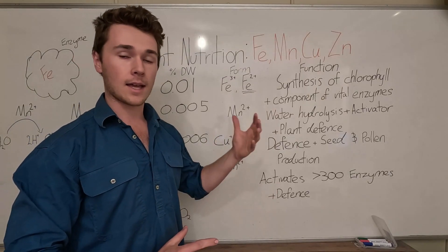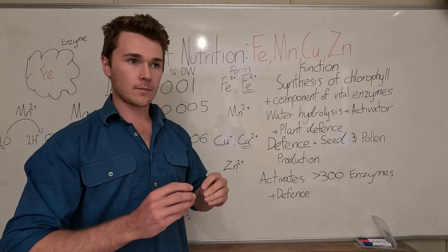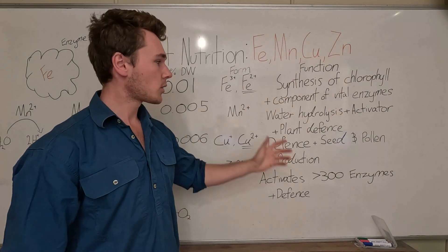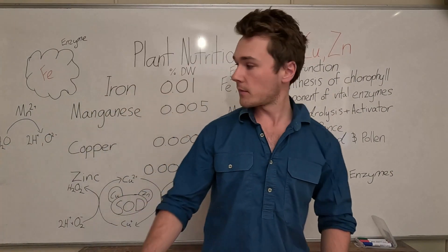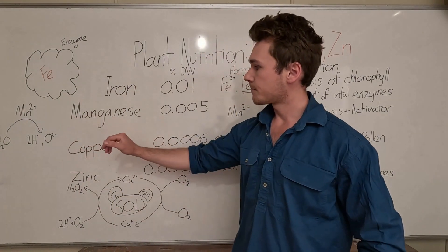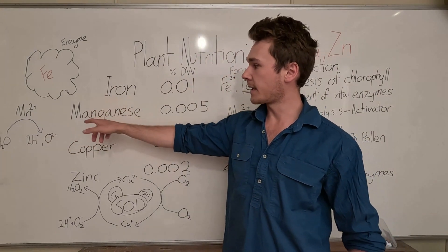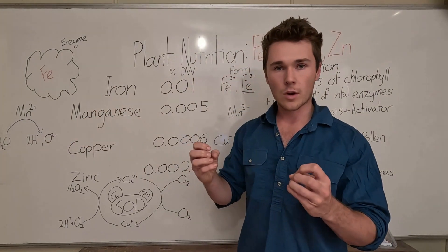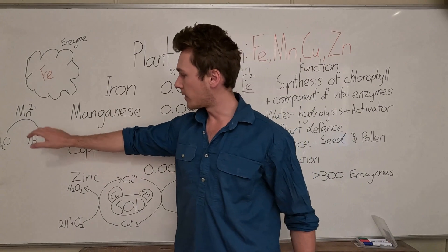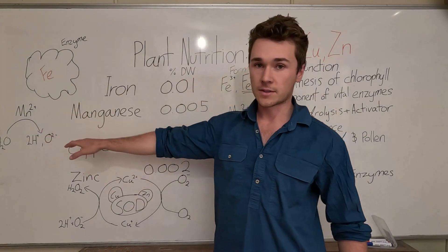Manganese has a really important role in photosynthesis where water is split and so that's called water hydrolysis. If we go over to this diagram over here we have basically water, it passes through a manganese protein and that splits our water in half and allows the individual bits to be used in photosynthesis.